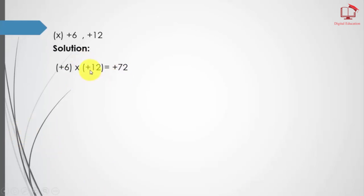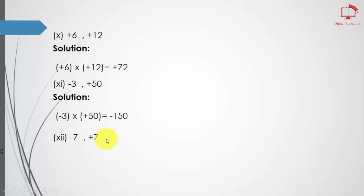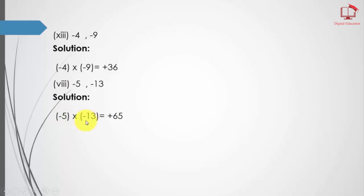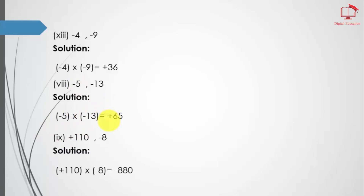Then 12 times 6 equals 72, and plus times plus equals plus. Then 5 times 3 equals 150 and plus times minus equals minus. Then 7 times 7 equals 49, and plus times minus equals minus. Part number 30: 9 times 4 equals 36, and minus times minus equals positive 36. Then 5 times 13 equals 65, and minus times minus equals plus. Part number 15: 110 times 8 equals 880, and minus times plus equals minus 880.